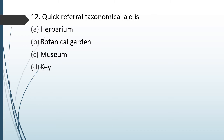Question No. 85: Quick referral taxonomical aid is: Option A — Herbarium, Option B — Botanical garden, Option C — Museum, Option D — Key. The correct answer is Option A — Herbarium.